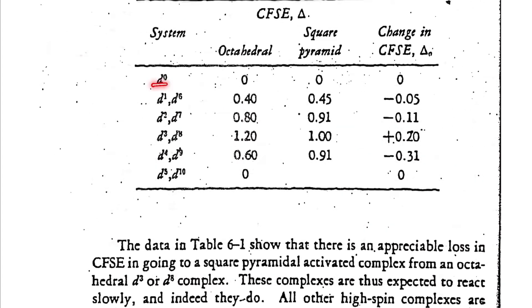For D0, D5, and D10 systems there is no CFSE change. These complexes are already very stable — the D0 system has an empty orbital, D10 has a completely filled orbital, and D5 has a half-filled orbital — all of which are inherently stable configurations. As a result, these complexes do not undergo ligand substitution reactions.